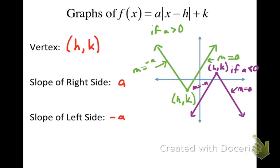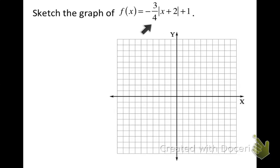I'd like to graph one equation with A, H, and K all present. We start with the vertex. H is the opposite of what you see inside the absolute value bars with x — since it's a plus 2, H is negative 2. K corresponds with the constant added after the absolute value — since that's positive 1, K is positive 1. So the vertex is at negative 2, 1.